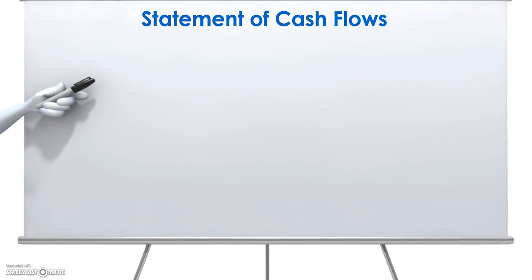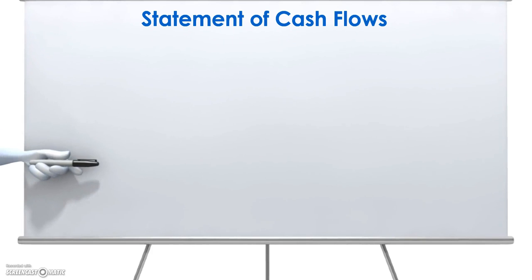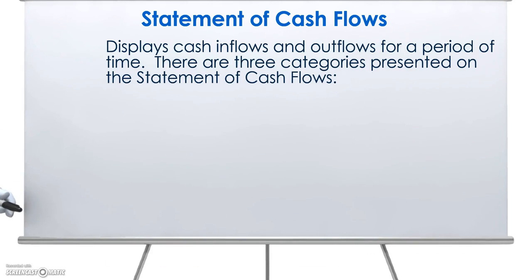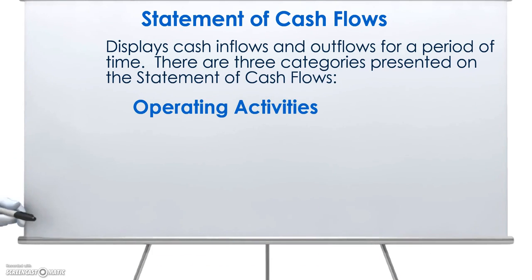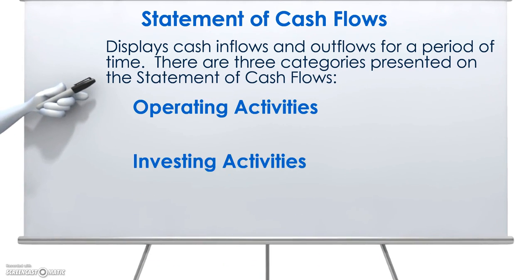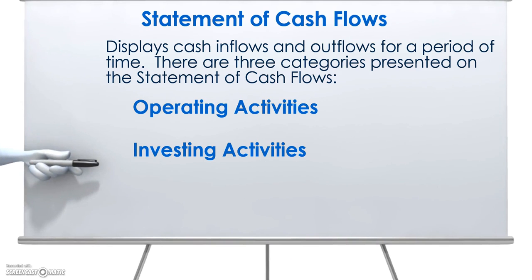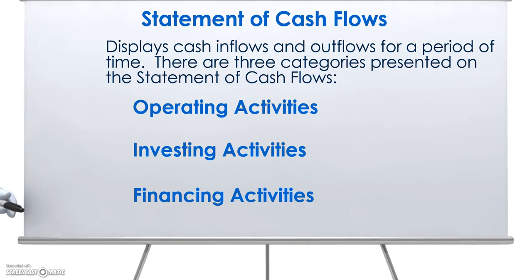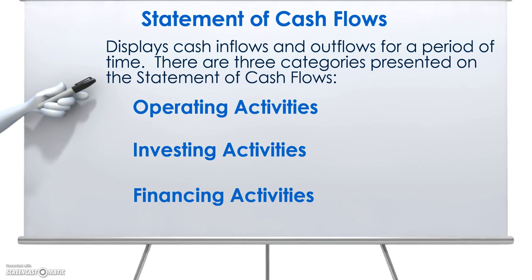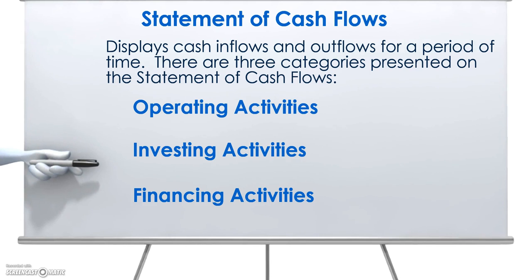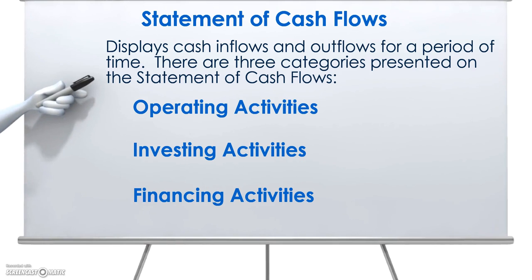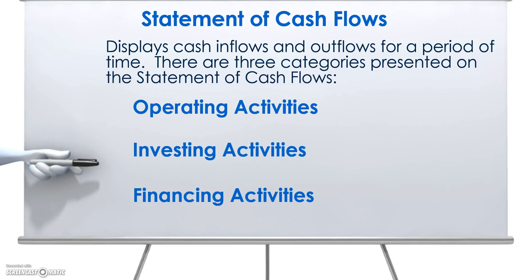The last statement is what we refer to as the statement of cash flows. The statement of cash flows displays inflows and outflows of cash over a period of time. This statement is a little different from the income statement because the income statement uses accrual-based accounting, where we record revenues when they're earned and expenses when they're incurred. The statement of cash flows only cares about when cash is received and when cash is paid. The three major categories are operating, investing, and financing.